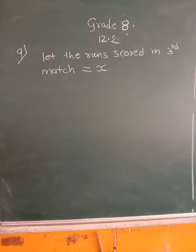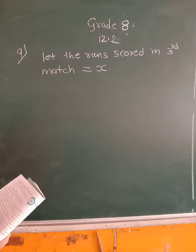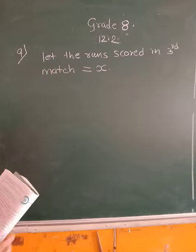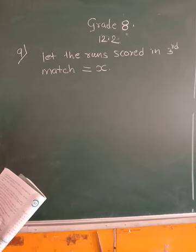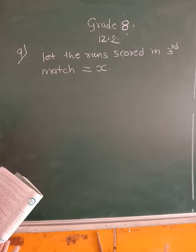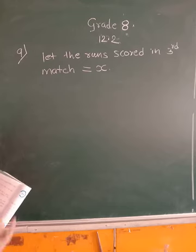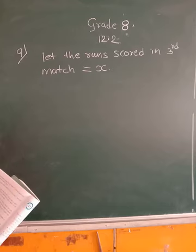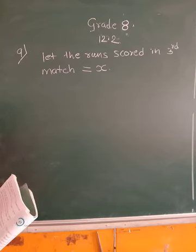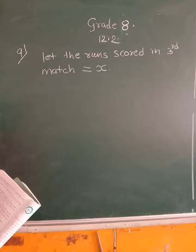Now see, let the runs scored in 3rd match be X. In 1st match he scored 180. And what is average? Average is we add all the 3 scores and divide it by 3. Average is sum of all observations upon total number of observations. We have seen this in statistics and in global classes also.